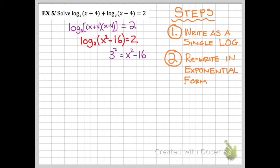Now I want to set one side equal to 0. So to do that, I evaluate 3 squared is 9 minus 16, and I subtract 9 from both sides, and I get x squared minus 25.